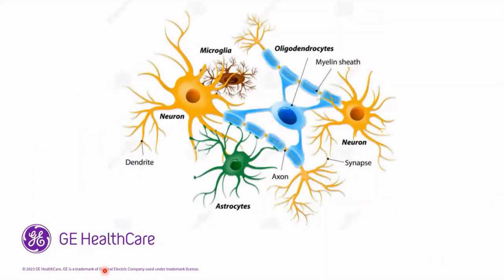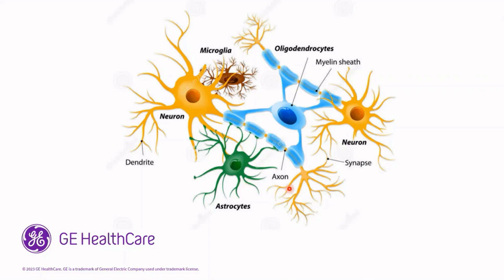When you take a portion of the brain, all of these types of cells are present. And of course, there are many different types of diseases associated with the brain, which are due to damage to some of the different types of neurons.